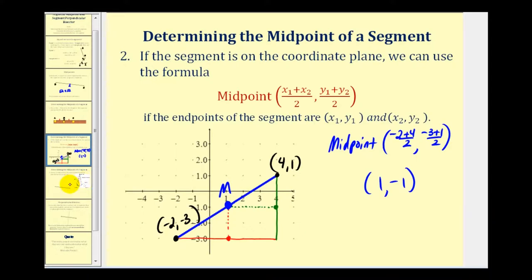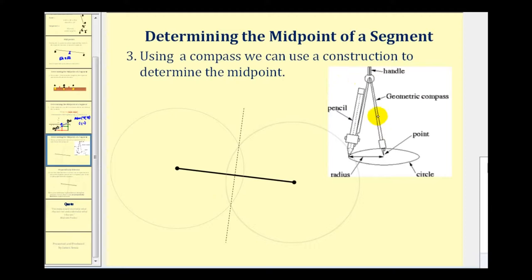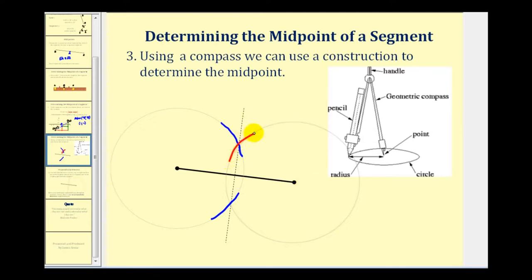The last way to determine the midpoint of a segment is through a construction using a compass. First, open the compass so that it's more than half the length of the entire segment. Then take the point of the compass and construct an arc above the segment and another arc below the segment. Now if we construct the segment through the intersection of these arcs, it will pass through the midpoint of the segment. Looking at this vertical dashed line here, notice how it passes through the intersection of these arcs — meaning this would be the midpoint of the given segment.